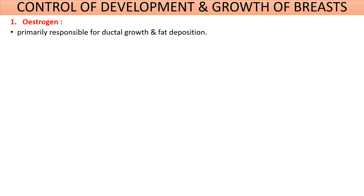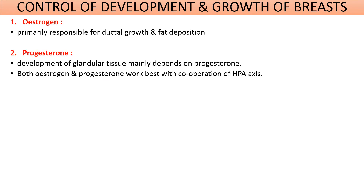Various hormones are necessary for the full growth and development of mammary glands. The first hormone is estrogen. It is the primary hormone responsible for ductal growth and fat deposition. It also causes thickening of the nipples.